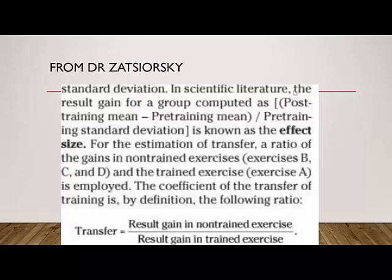From Dr. Zatsiorsky, this is a straight excerpt from his book. In the scientific literature, the result gain for a group — computed as post-training mean minus pre-training mean divided by pre-training standard deviation — is known as the effect size. For the estimation of transfer, a ratio of the gains in non-trained exercises to trained exercises is used. The coefficient of the transfer of training is, by definition, the result gain in the non-trained divided by the result gain in the trained. That's the Transfer Index.